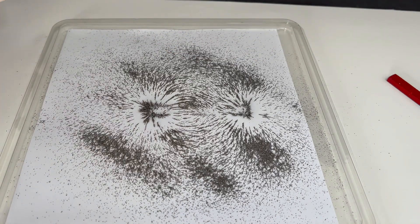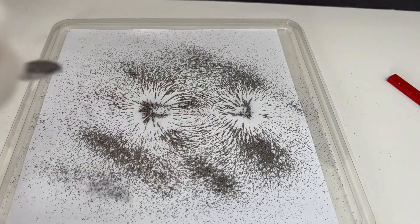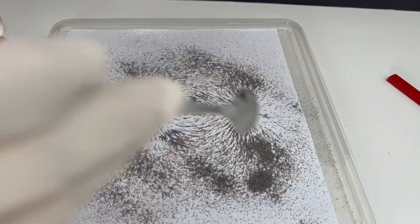These lines are showing us the invisible magnetic field around the bar magnet.